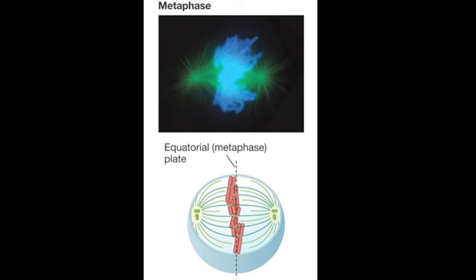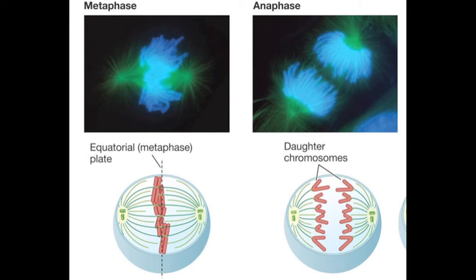Metaphase is where the centromeres of the highly supercoiled chromosomes are all lying on the metaphase plane, or plate, perpendicular to a line connecting the division poles. Anaphase is where the first separation of sister chromatids occurs, creating daughter chromosomes.